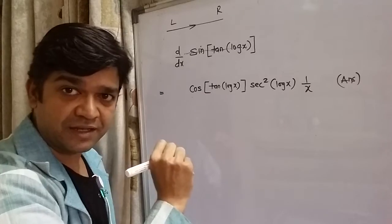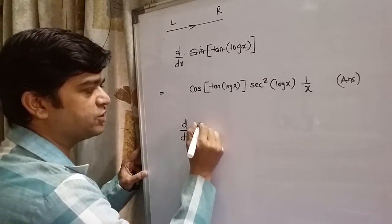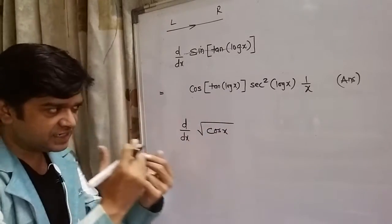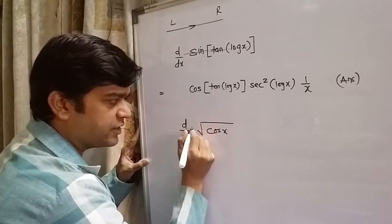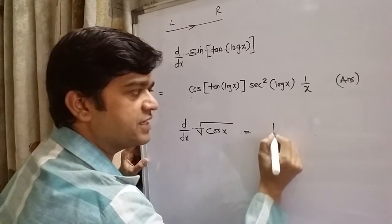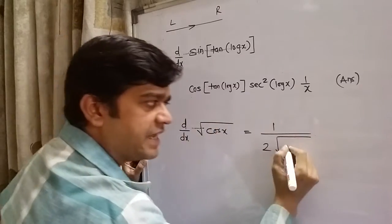Hope things are clear. You want one more example? Look here. Suppose I want to find derivative of root of, say, cos x. Imagine a line. First, what it cuts? It cuts root function, square root function. Now what is derivative of square root function? 1 by 2 root. Keep the remaining part as it is, that is cosine of x.